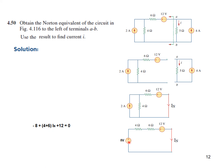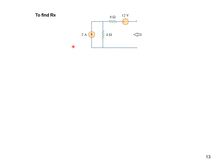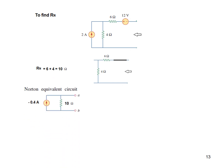Writing the KVL equation: minus 8 plus 4 In plus 6 In plus 12 equals 0. From this we calculate In = minus 4 over 10 = minus 0.4 ampere. To find Rn, we put the current source to zero (open circuit) and voltage source to zero (short circuit). The two resistances are in series: Rn = 6 plus 4 = 10 ohm. The equivalent circuit is minus 0.4 ampere with 10 ohm.